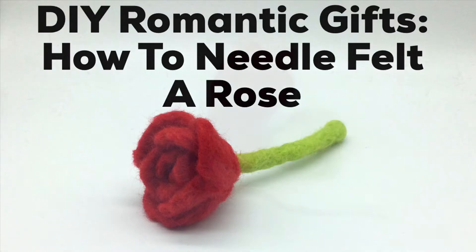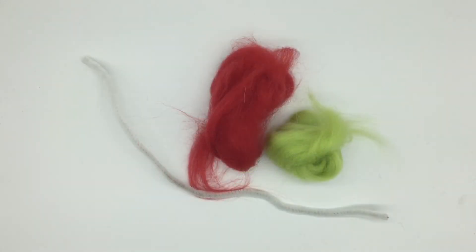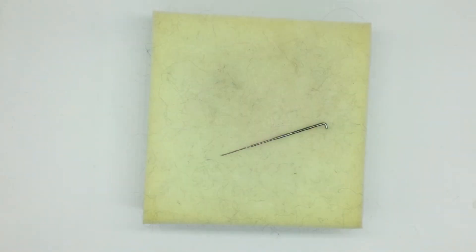The first thing you need is a pipe cleaner, some red and green felting wool, a felting mat, and a felting needle.